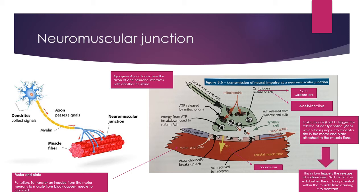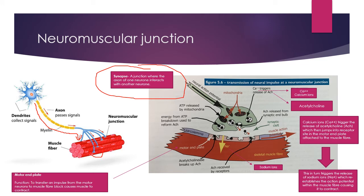So the action potential has travelled down the axon and we've arrived at our neuromuscular junction and our motor end plate, which we can see on the right-hand side — a magnified view of the area circled on the left. The purpose of the motor end plate is to transfer an impulse from the motor neuron to the muscle fibre block, which causes the muscle to contract. There is a gap between these two structures, otherwise known as a synapse — a junction where the axon and one neuron interact with one another.